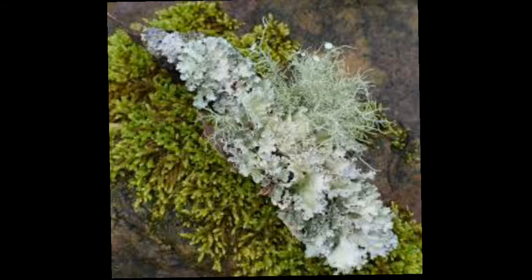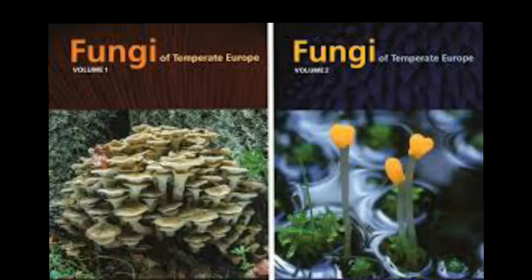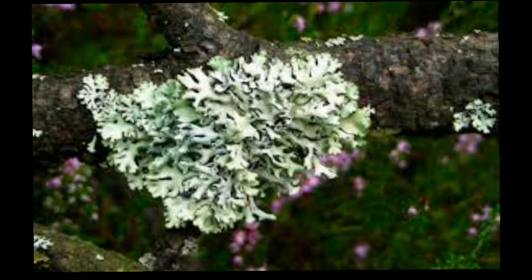In lichen, there is symbiosis between two organisms — one is fungus and the other is algae, basically green algae. Green algae can undergo photosynthesis and produce nutrients. These nutrients are utilized by the fungus, and in return the fungus gives shelter, water, and helps in surviving in very harsh conditions where it is impossible for the algae to survive.